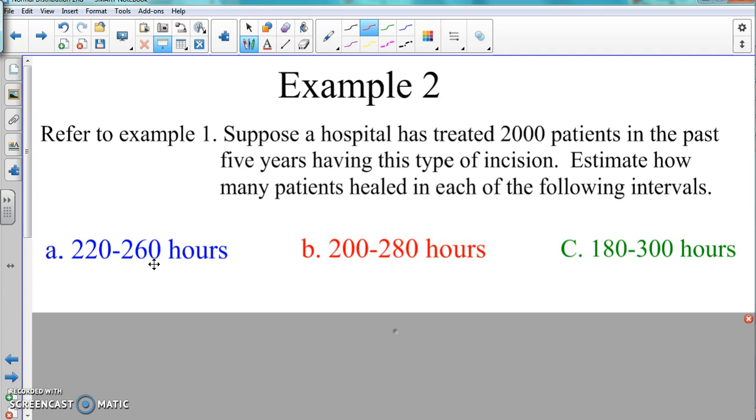It's a bigger range, so how many of those 2000 people will be healed by that point? These are healing times: healing between the first one in blue, the second one in red, and the third one in green.